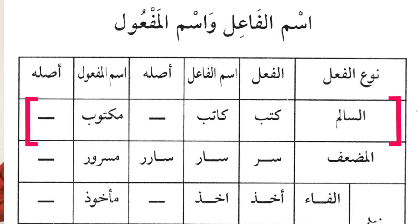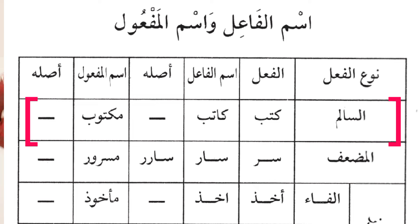The first type is as-salim, which means a sound verb — all of its letters are sound, with no sick letter, no waw, no alif, no ya. An example is the word 'kataba'. To form the ismul fa'il from this type, it is simply 'katibun' — 'kataba' means 'he wrote', 'katibun' means 'a writer', and 'maktubun' means 'what is being written'. So: a writer wrote something that he wrote.